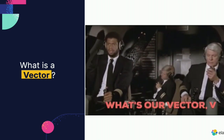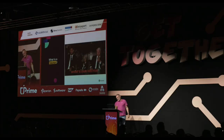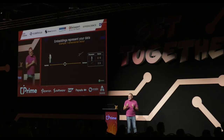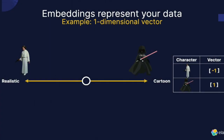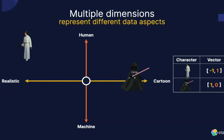So what is a vector? A vector represents a way to categorize your data. As an example, I have an image of Princess Leia on the left and Darth Vader on the right. I want to represent this data: is it realistic or a cartoon? The coordinate for Leia is minus one because she is realistic, and for Darth Vader it's plus one because he's a cartoon. Now I also want to represent whether something is human or machine.